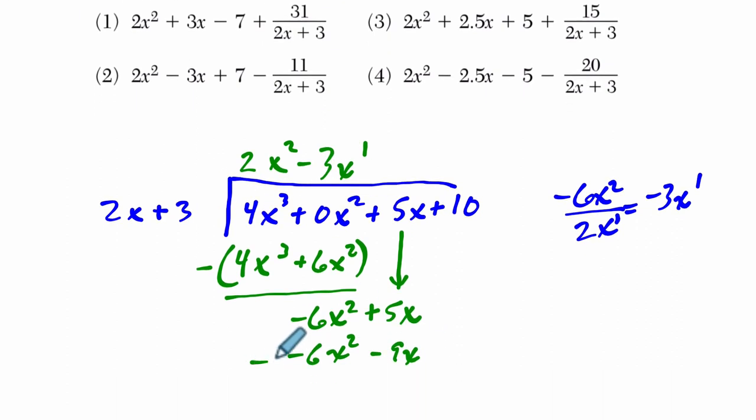And we should track to find out what's left over. What do we still have to reach? Negative 6x² minus itself is 0, and 5x minus a minus, careful there, double negative, we're adding, we get 14x. And then we bring down this 10 right here.